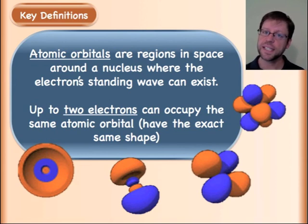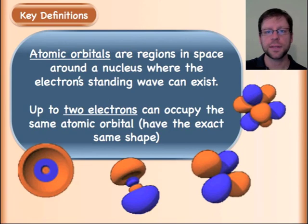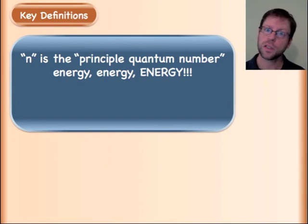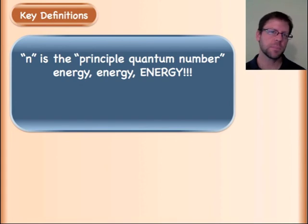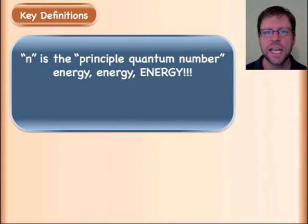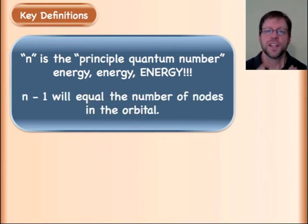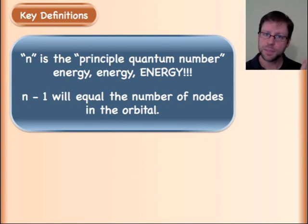There are these things called quantum numbers that you plug into equations and they can tell you all sorts of good things about what the actual solutions are. N is the principal quantum number — I need you thinking energy, energy, energy. That's what all of this stuff is about: what energies are these electrons at? Are they at low energies — very few nodes — or high energies with lots of nodes?